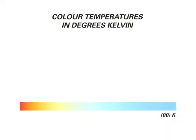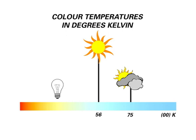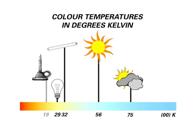All light looks white to an untrained eye, but in reality each type of light — sunlight at daytime, sunlight in the shade, under cloudy conditions, light from a tungsten lamp or fluorescent fixture — are all composed of different colors. Daylight is more blue and fluorescent light is more red, for example.